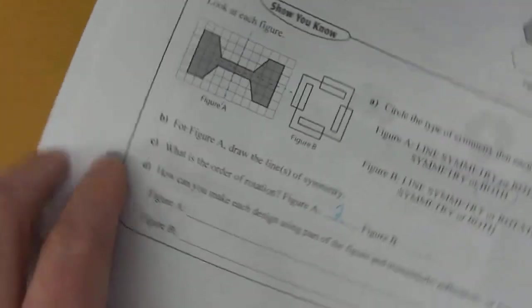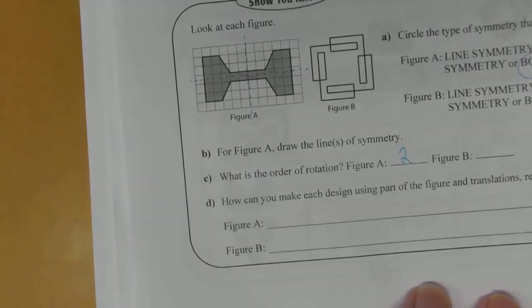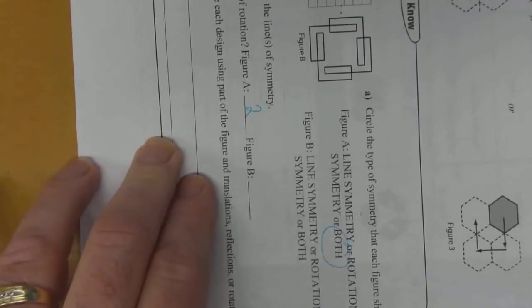And it would be the same deal if you went with the other oblique. So there's no lines of symmetry on B. However, if you rotate it, same shape.